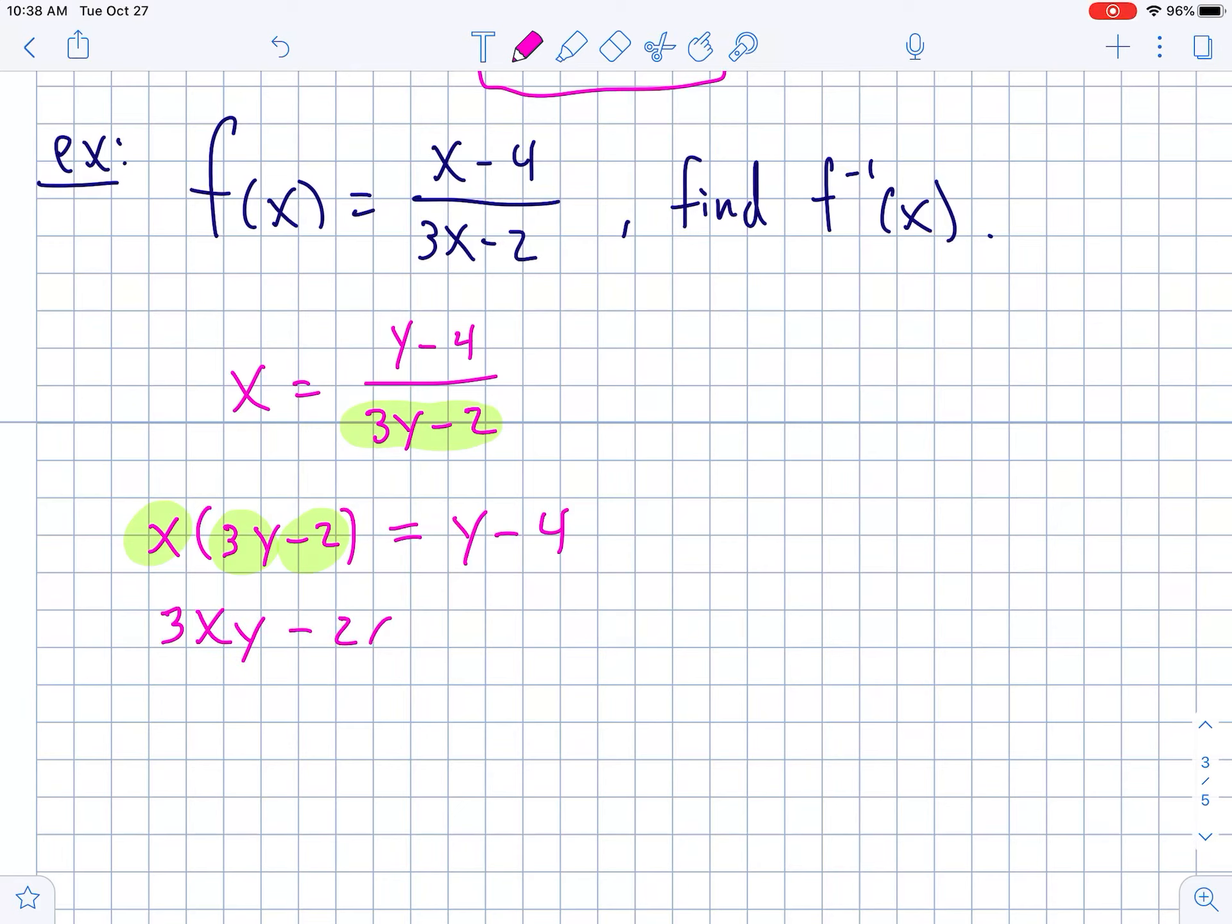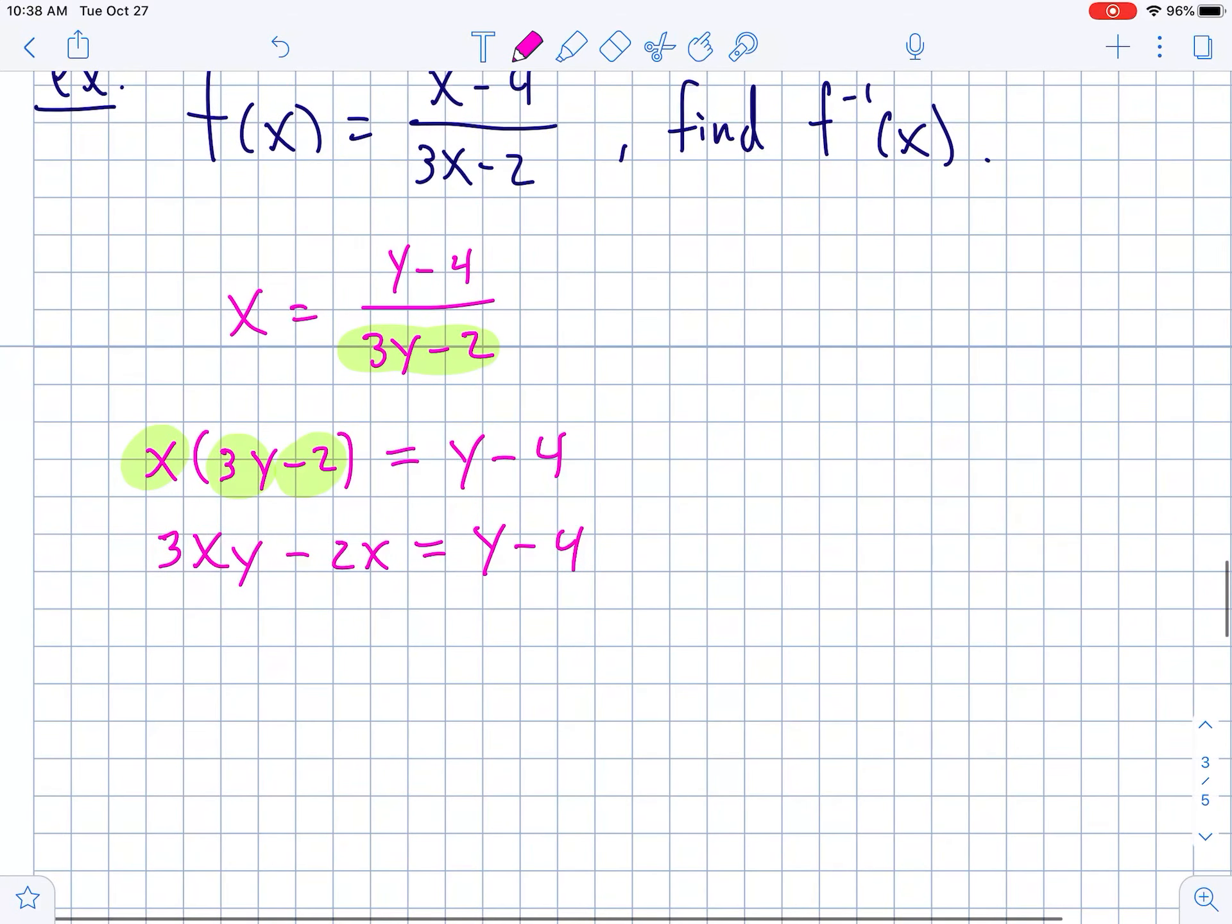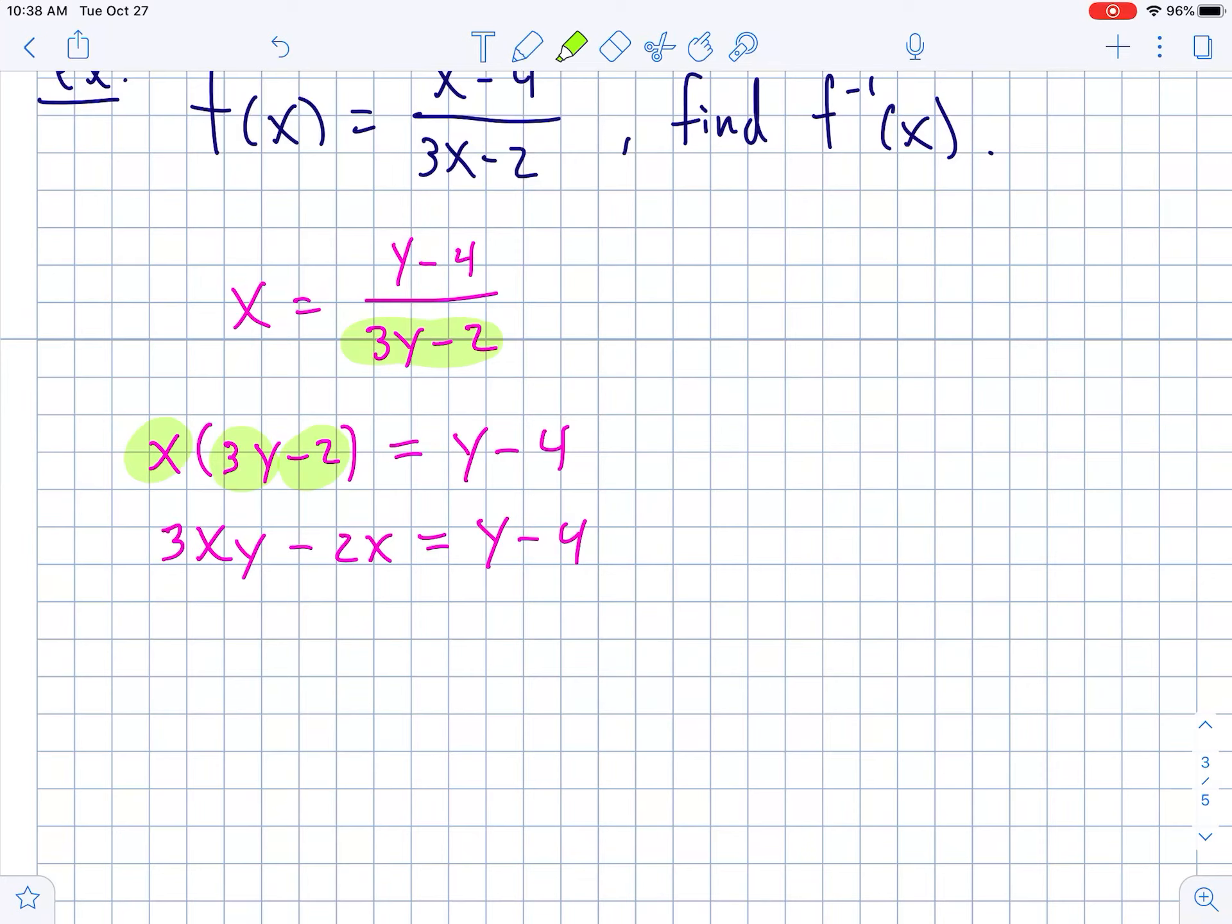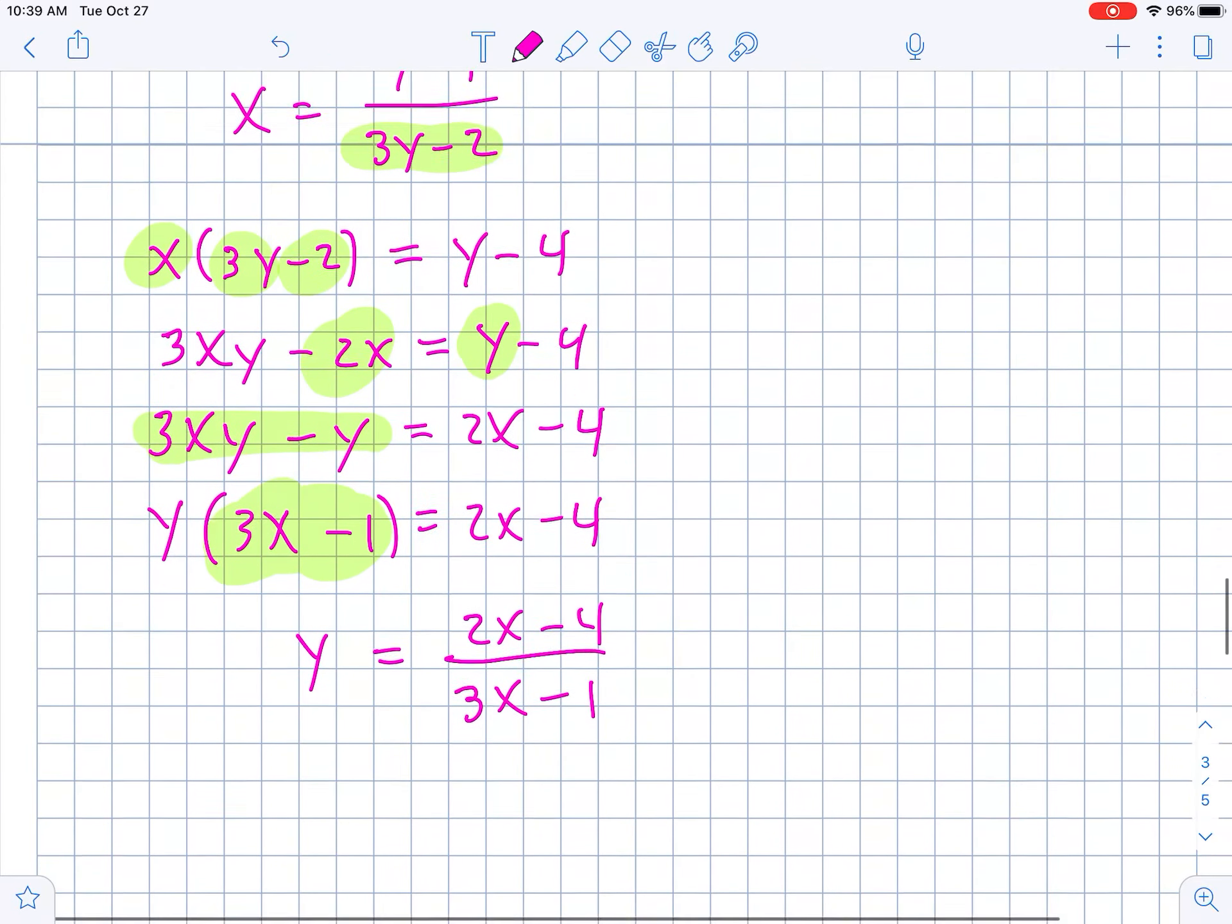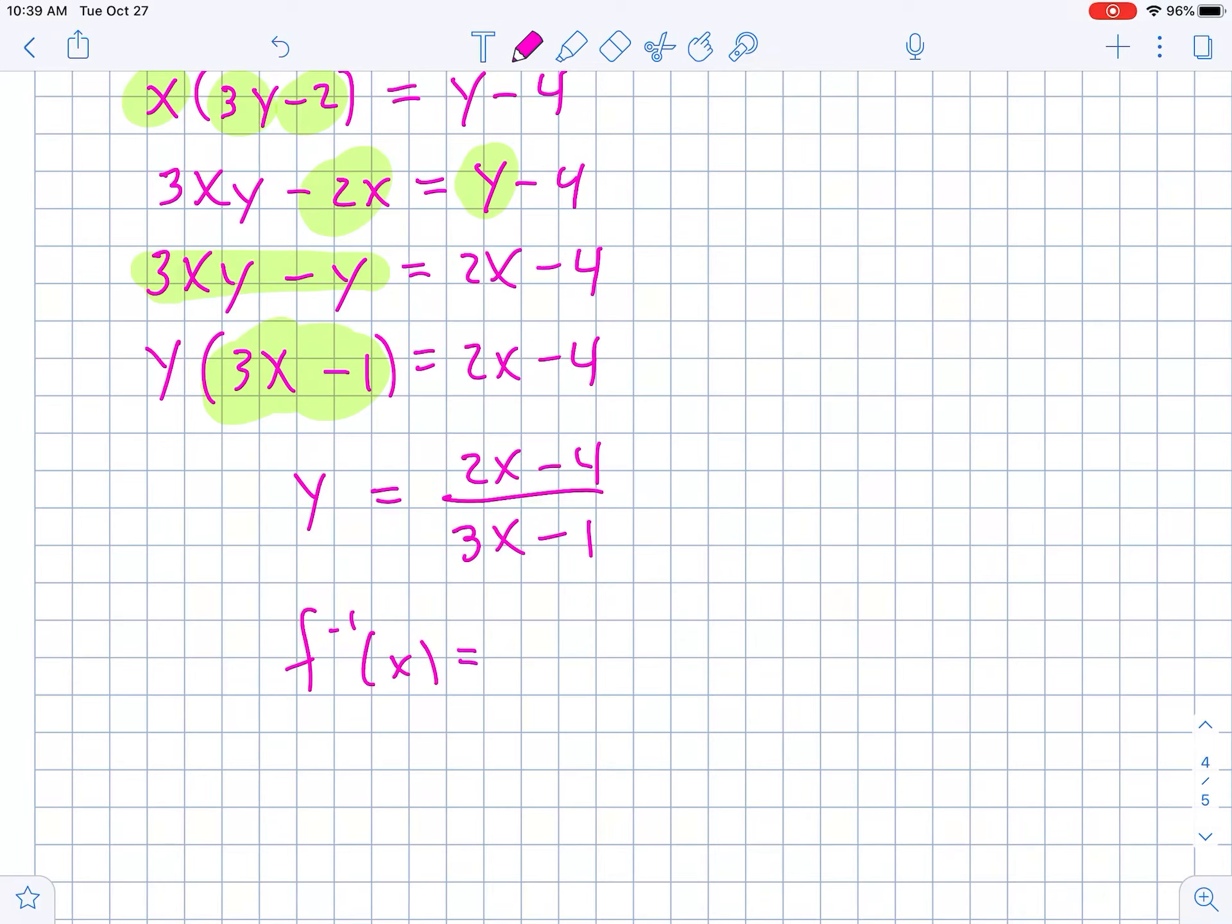So, we get x times 3y minus 2 is equal to y minus 4. Then I'm going to distribute this x to the 3y and the negative 2. So, we get 3xy minus 2x is equal to y minus 4. Now, I'm going to get anything with a y on the left-hand side and anything without a y on the right-hand side. So, I'm going to move things around. 3xy, I'm just going to let chill over here, but then this y, I'm going to subtract over to the other side. And then this negative 2x, I'm going to add to the other side. So, we get 2x minus 4. Now the reason I got everything with y on one side is now both of these terms have a y in common and you can factor it out. And then there's only one y and we can divide both sides by this 3x minus 1.